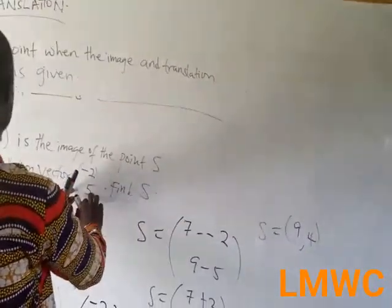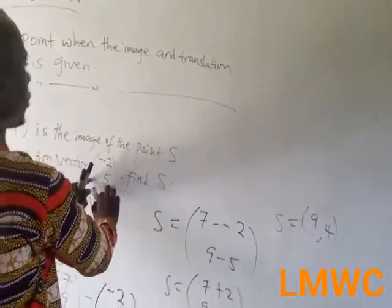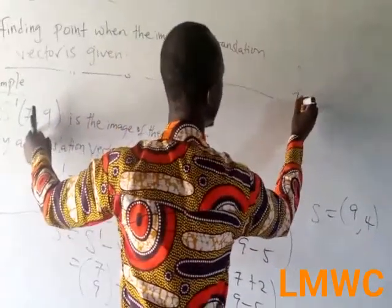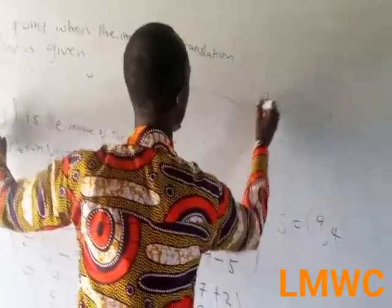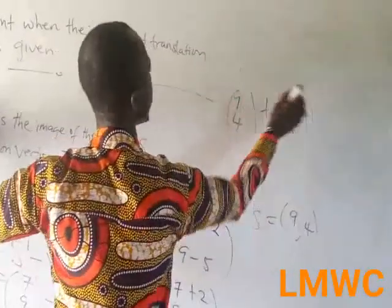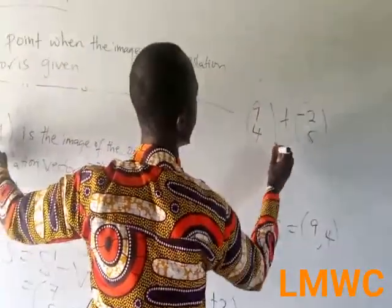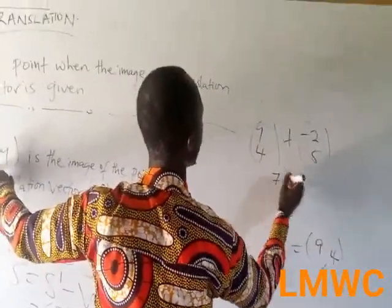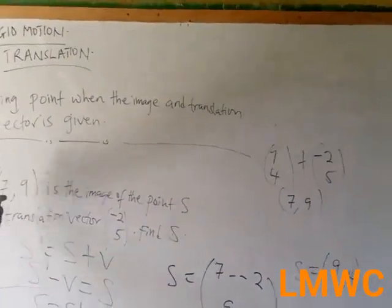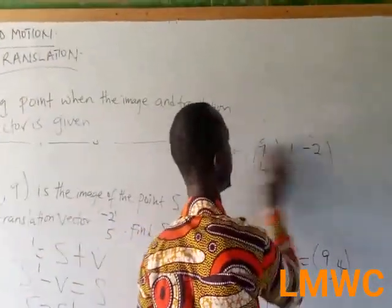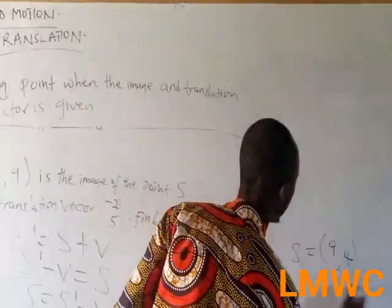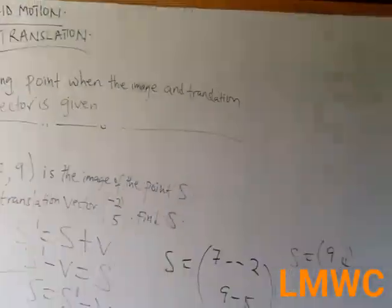To verify: (9, 4) plus (negative 2, 5) — 9 plus negative 2 is 7, and 4 plus 5 is 9 — we get the image (7, 9). The answer is (9, 4). Take note, we are leaving it in coordinates.